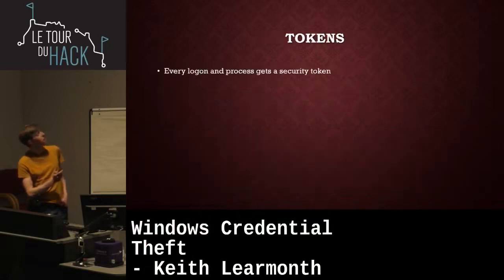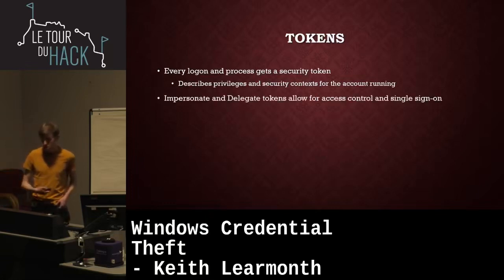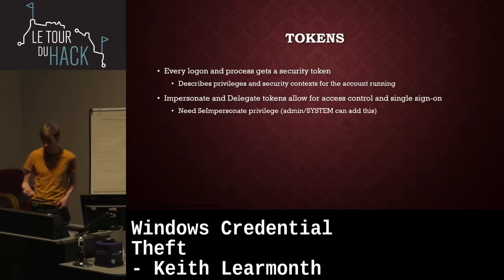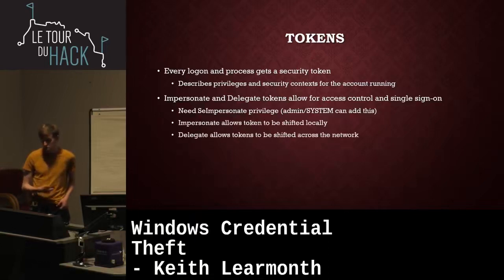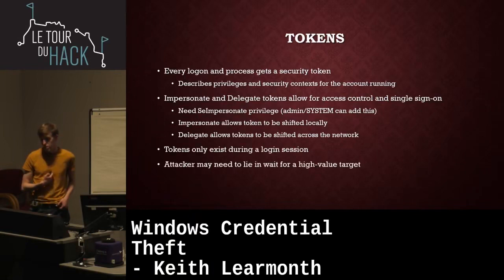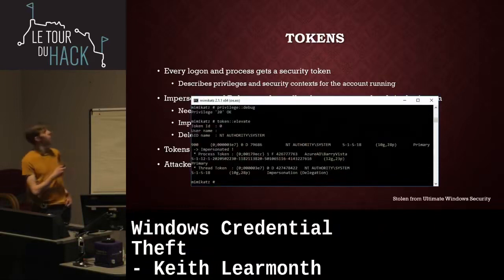In a domain, every logon process gets a security token describing the privileges and security context for the running account. Impersonate and delegate tokens allow for single sign-on: the impersonate privilege lets you run processes as other users, and delegate does the same over network resources. These tokens only exist during a logon session, but if you have SeImpersonatePrivilege — which local admins have — you can sit on the host, wait for a domain admin to log on, and just take their token and use it yourself.